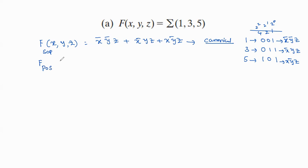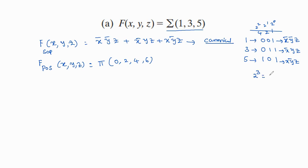For this expression we should also write the POS form. To write the POS, first we should write the max term numbers. The missing numbers from the min term numbers are the max term numbers. Therefore it should be represented as Π(0, 2, 4, 6), because the largest number is 5, meaning only 3 bits are required, giving 2³ = 8 combinations (0 to 7). Since 1, 3, 5 are min term numbers, the max term numbers are 0, 2, 4, 6.